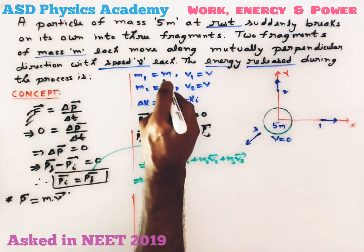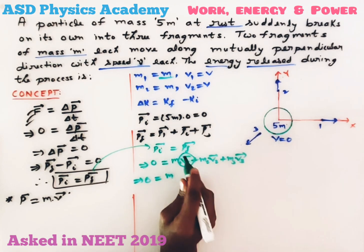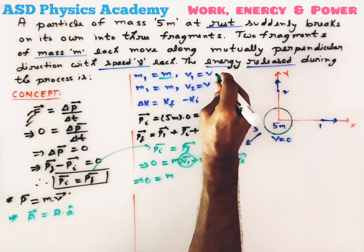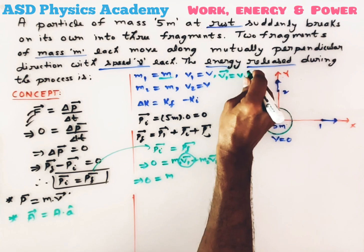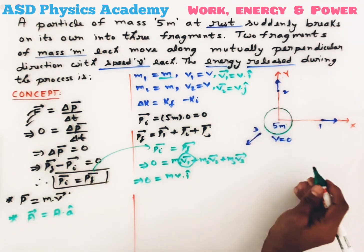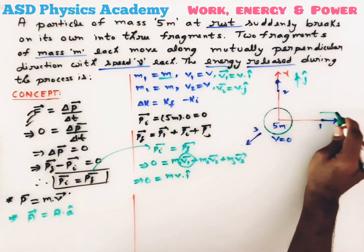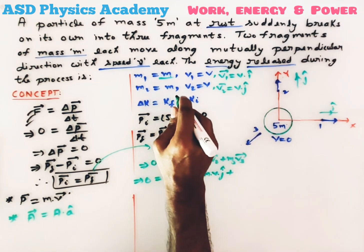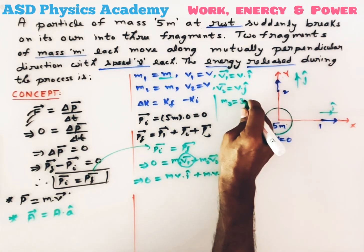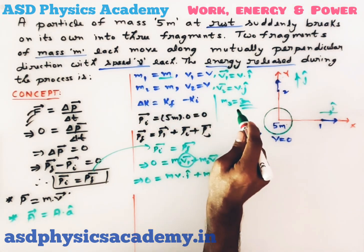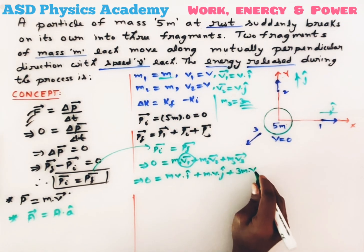Now we put the values. This is in vector form. Any vector is represented by its magnitude and unit vector along its direction. The first particle moves along x, so its velocity is v·î. The second particle moves along y, so its velocity is v·ĵ. For the third particle, mass m3 = 3m because before and after the explosion total mass must be 5m — so m1 + m2 + m3 = 5m gives m3 = 3m — and velocity is v3.